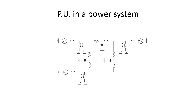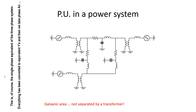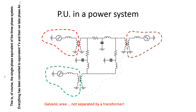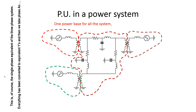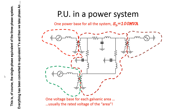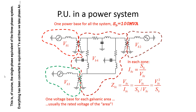What about a power system? We begin by defining what is a galvanic area: it is a part of the circuit not separated by the magnetic field of a transformer. In this circuit, there are four galvanic areas. We will use one power base for all the system — in America it is customary to use 100 MVA as the base for power. For each galvanic area, we choose the rated volts as the base voltage: VB1, VB2, VB3, and VB4. Then we compute the rated current and base ohms in each zone.